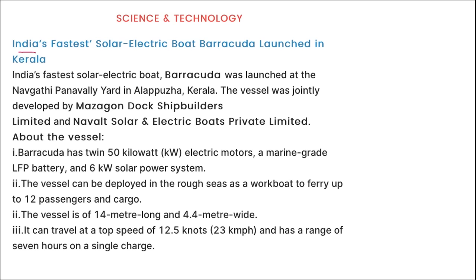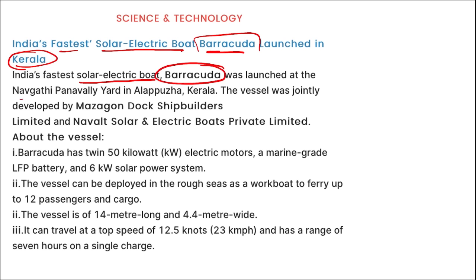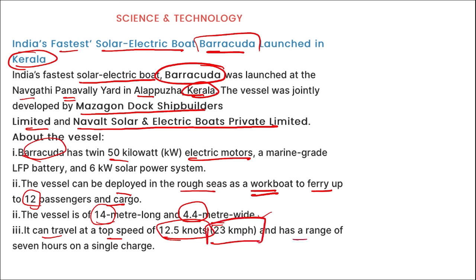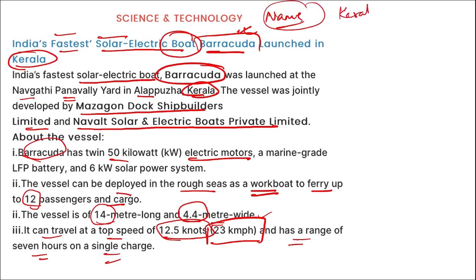India's fastest solar electric boat, named Barracuda, was launched at the Navgati Panwali Yard in Alappuzha, Kerala. It was jointly developed by MDL (Mazagon Dock Shipbuilders Limited) and Naval Solar and Electric Boats Private Limited. Barracuda has twin 50 kW electric motors, can ferry up to 12 passengers and cargo, is 14 meters long and 4.54 meters wide, travels at a top speed of 12.5 knots (23 km/h), and has a range of 7 hours on a single charge.